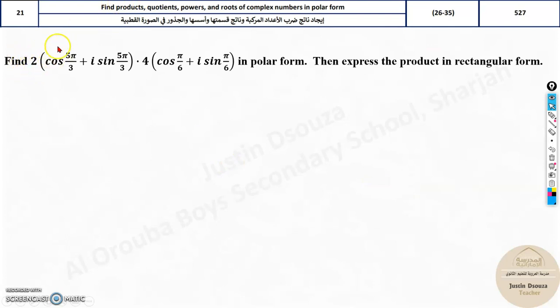Now then, we will solve the problem. Find 2(cos 5π/3 + i sin 5π/3) multiply it by 4(cos π/6 + i sin π/6) in polar form. Then express the product in rectangular form. So once you solve the product, you need to convert it back to rectangular form. Let's see how it is done. First of all, write the formula. This is very important.